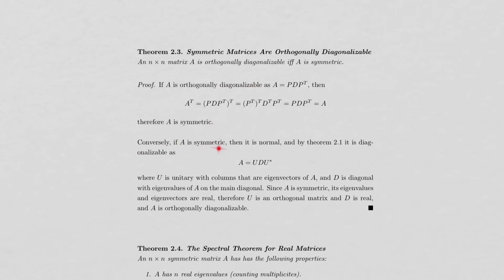Conversely, if A is symmetric then it is normal, so by Theorem 2.1 it is diagonalizable as UDU*, where U is unitary and D is diagonal with the eigenvalues of A. Since A is symmetric, its eigenvalues and eigenvectors are real, making U an orthogonal matrix and D a real diagonal matrix, so A is orthogonally diagonalizable.